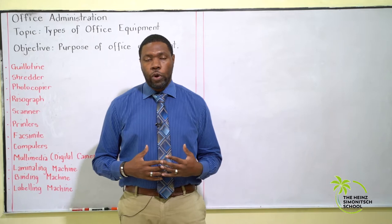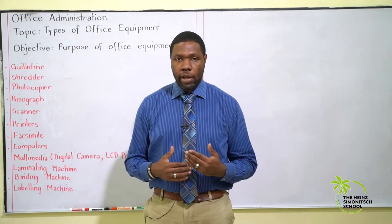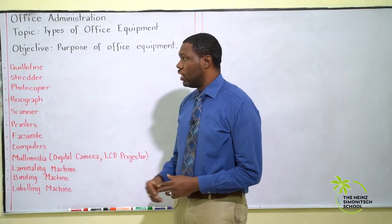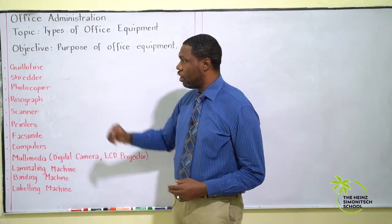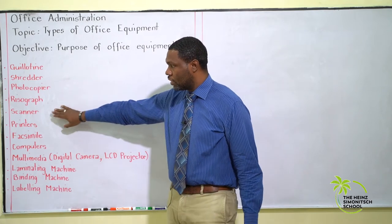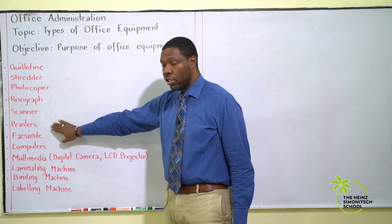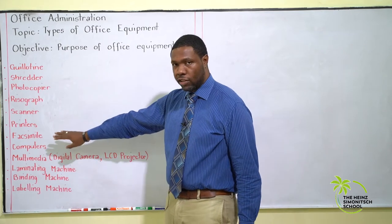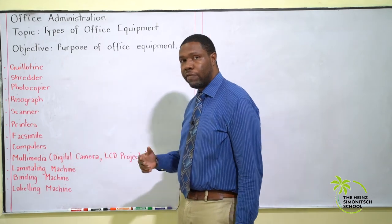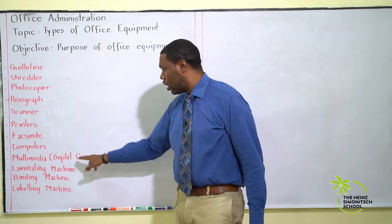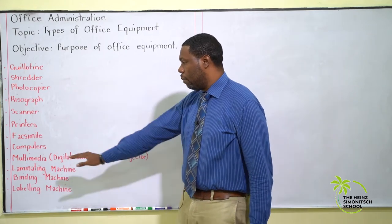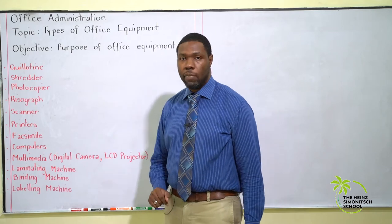Now we're going to be looking at some of these equipment. The list includes: guillotine, shredder, photocopier, risograph, scanner, printers, facsimile — yes, that's the correct pronunciation — computers, multimedia (specifically the digital camera and the LCD projector), laminating machines, binding machines, and labeling machines.